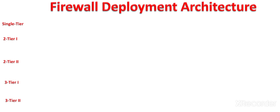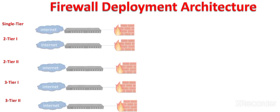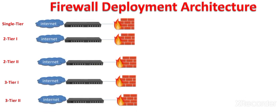In single-tier architecture, the organization has a single network. In two-tier architectures, the organization has two networks. In three-tier architectures, the organization has deployed three networks, excluding the internet. In all five deployment architectures, there is one thing in common: we have an internet, then a router which connects the organization to the internet, and then a security device — the firewall.